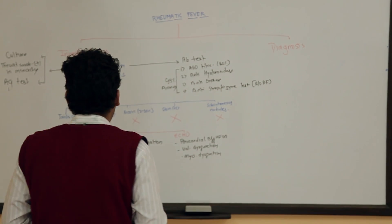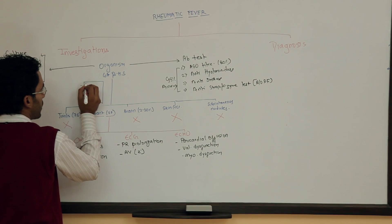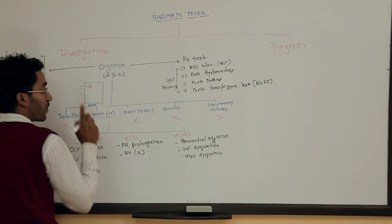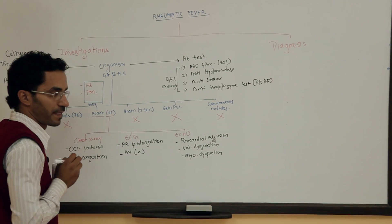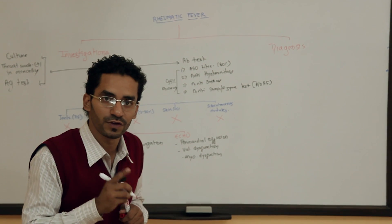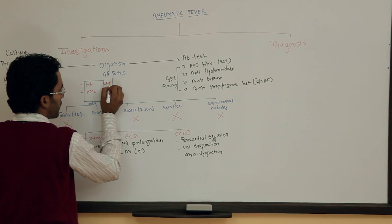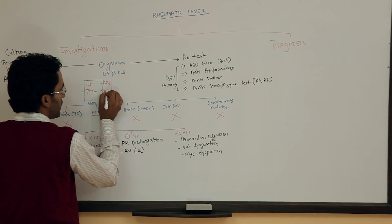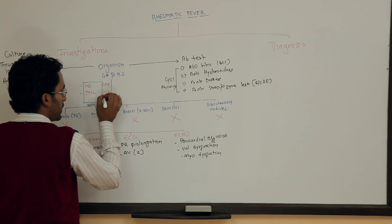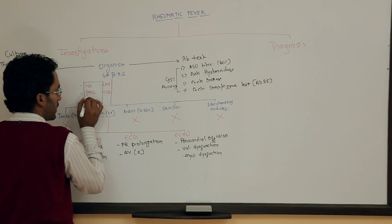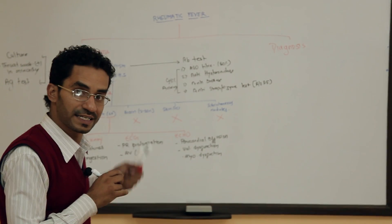What are the blood investigations? We go for hemoglobin, because there is anemia. We go for WBC count, because there is polymorphonuclear leukocytosis. We go for CRP — C-reactive protein is positive. We go for ESR, which is increased. So: decreased hemoglobin, increased ESR, positive CRP, and increased polymorphonuclear leukocytes.